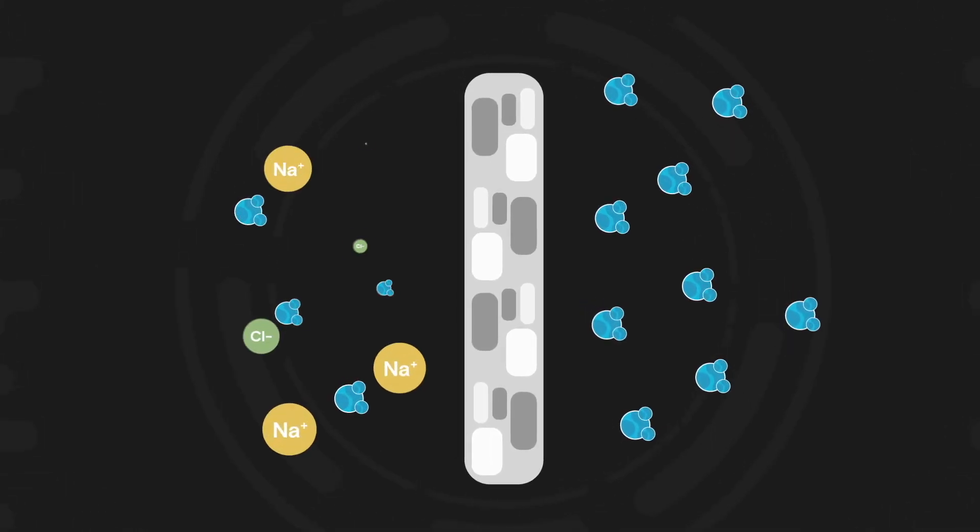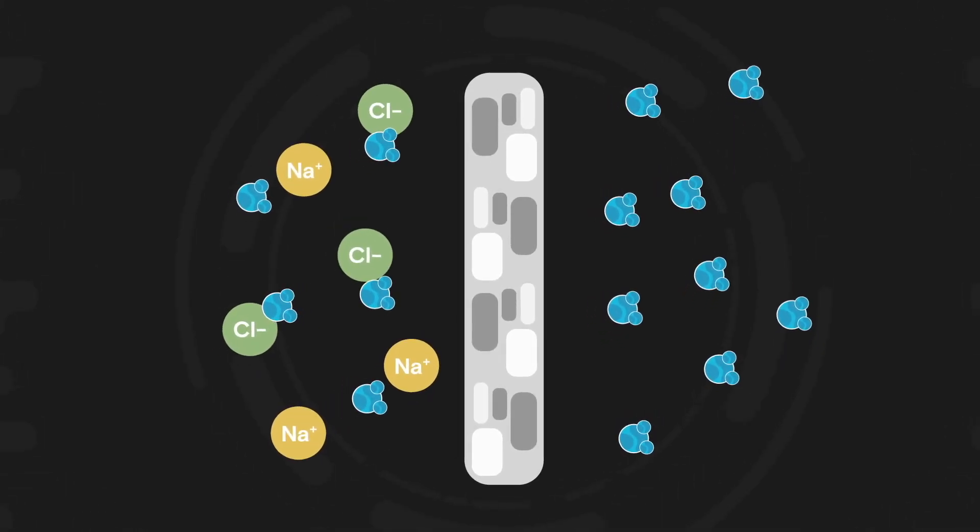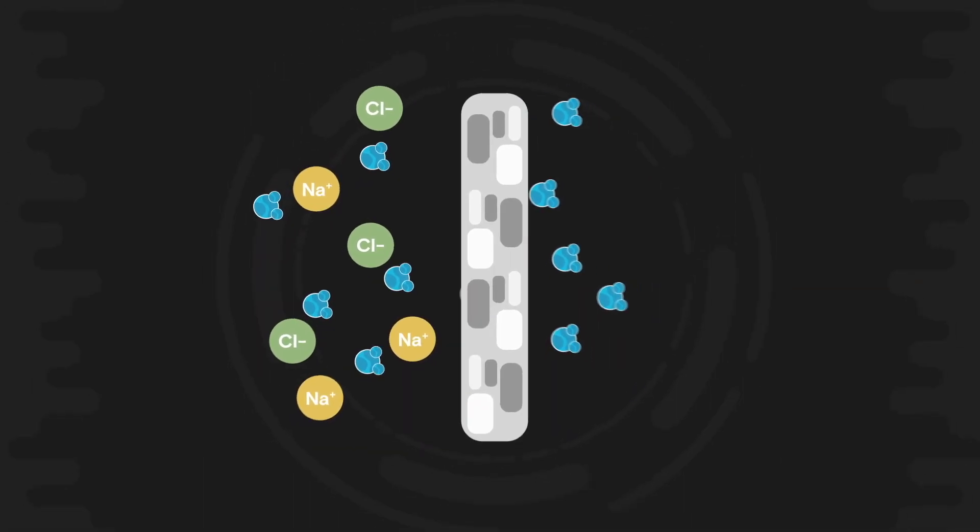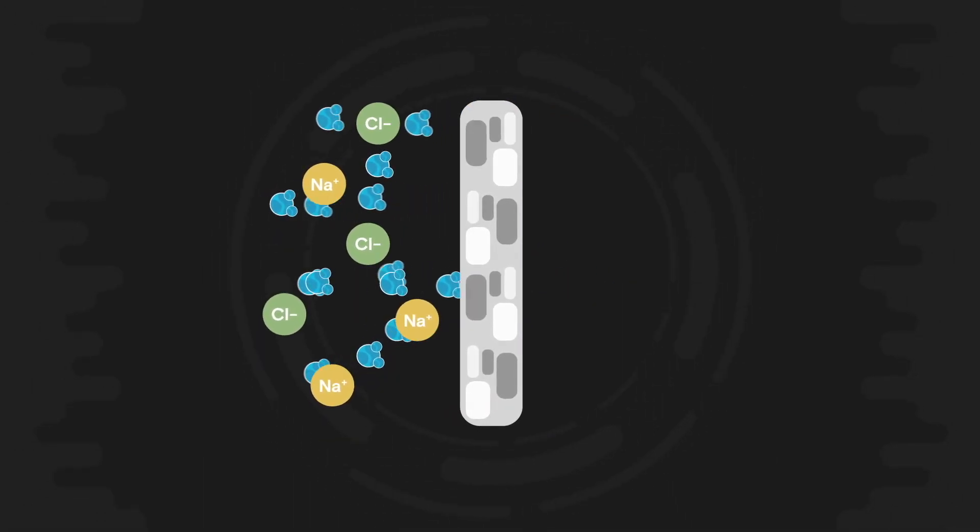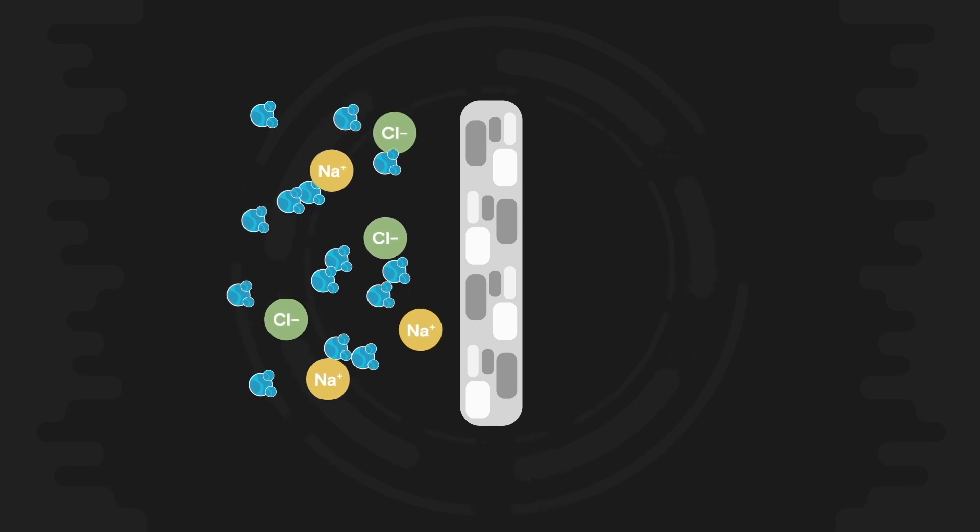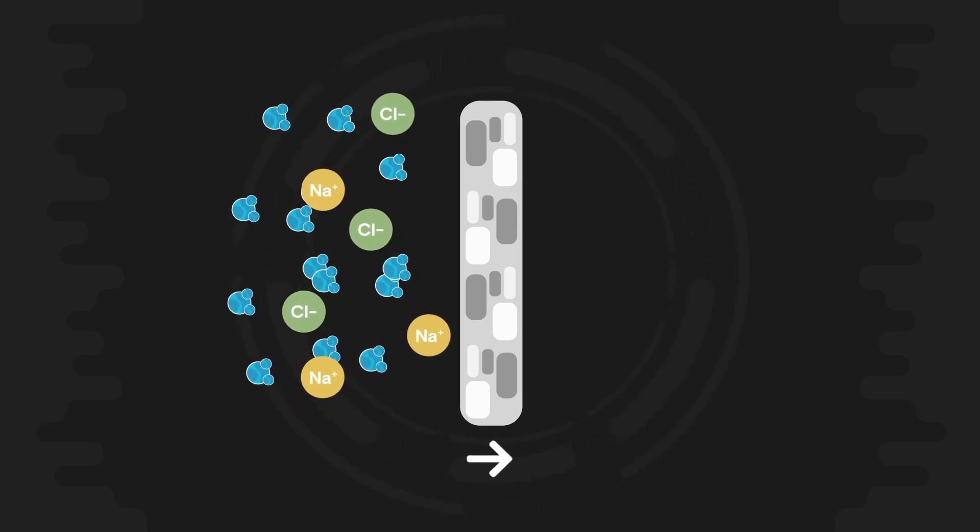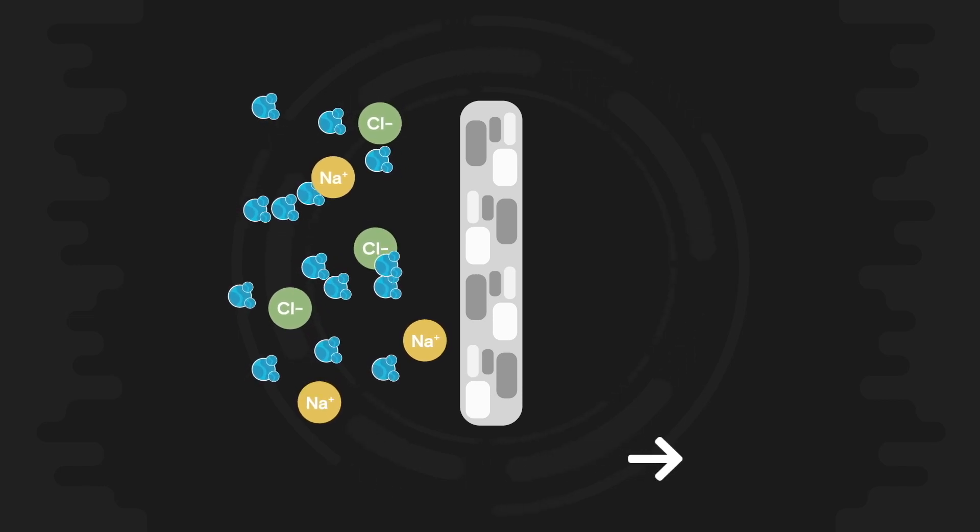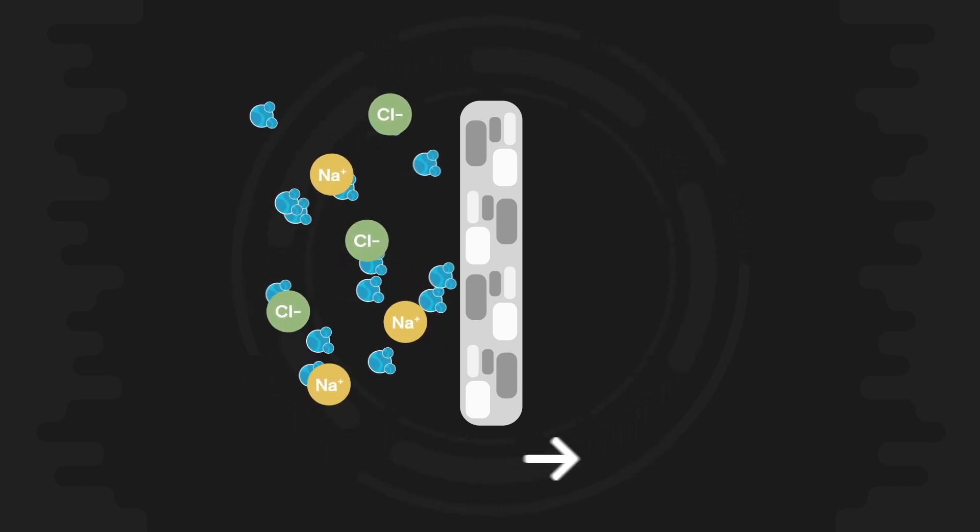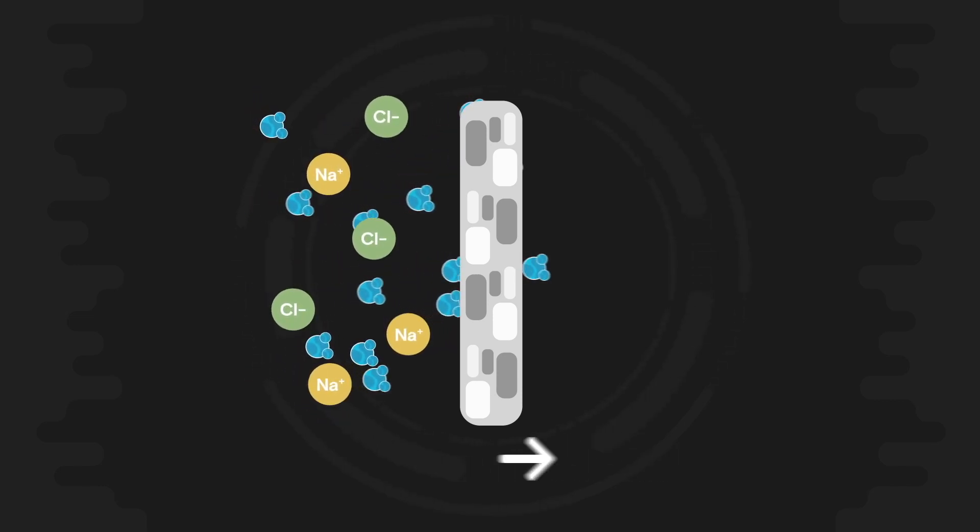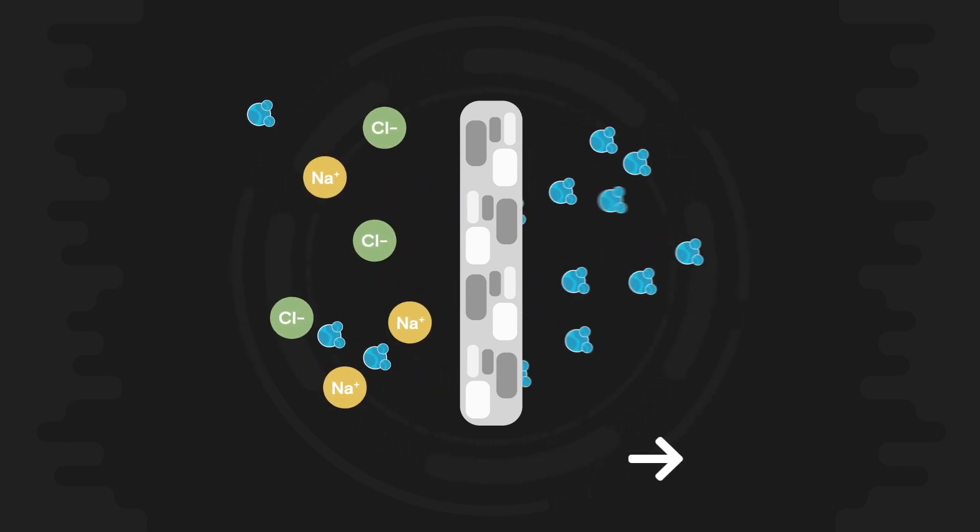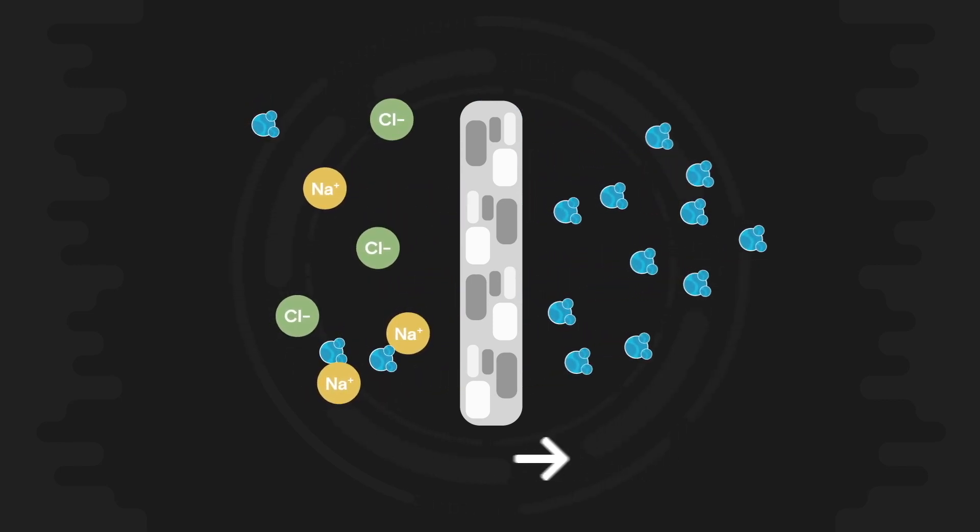The word osmosis might ring a bell back from high school biology. It's a process by which molecules of a solvent tend to pass through a semi-permeable membrane from a less concentrated solution into a more concentrated one. Reverse osmosis is the opposite. Water moves from a high concentrated solution to a less concentrated solution. It's the opposite of what happens spontaneously in nature, so you've got to put energy into the system to make it happen.